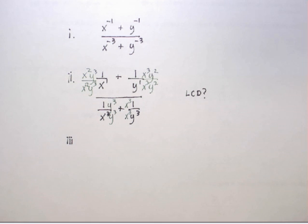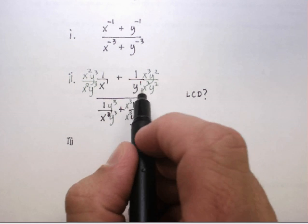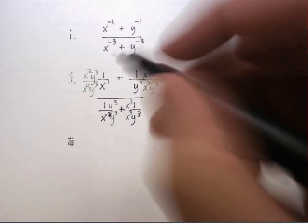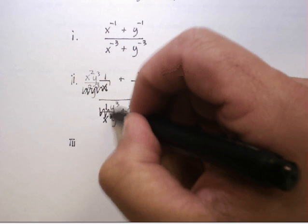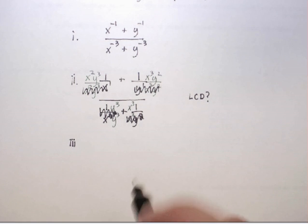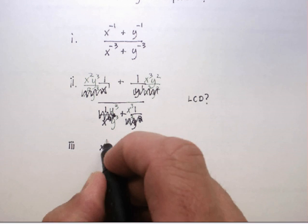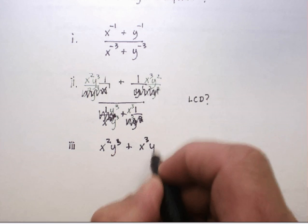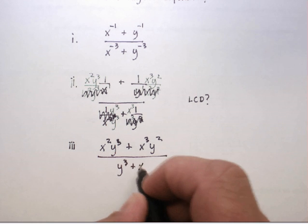And the last term I need to multiply by x cubed over x cubed. Now if you look at each one of these smaller denominators, they all have the same denominator: x cubed y cubed, x cubed y cubed, x cubed y cubed, x cubed y cubed. The trick here is that you can now cross out each of these denominators and rewrite just the numerators that are left over. That gives me x squared y cubed plus x cubed y squared, over y cubed plus x cubed.